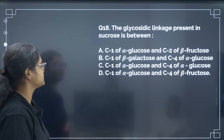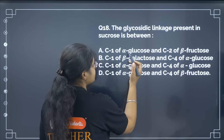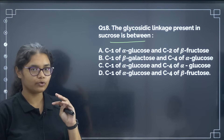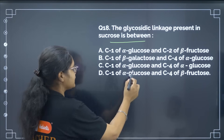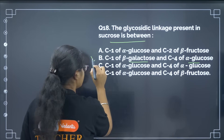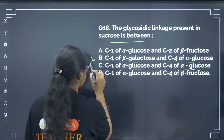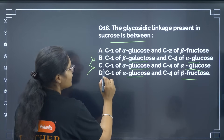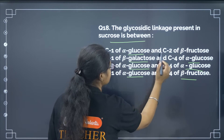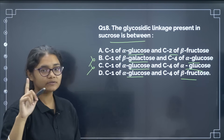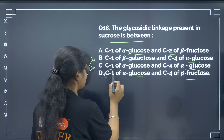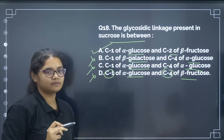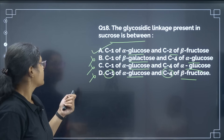The glycosidic linkage present in sucrose is between what? Sucrose is a disaccharide of glucose and fructose. We can eliminate galactose-glucose and glucose-glucose options. The linkage in sucrose is C1 to C2 between glucose and fructose, not C1 to C4. The correct answer is option A.